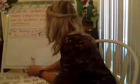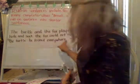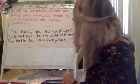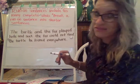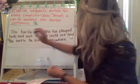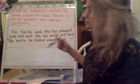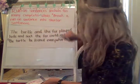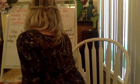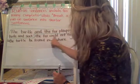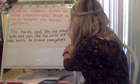Next one. This one has a lot of words and no punctuation. The sentence is: 'The turtle and the fox played hide and seek. The fox could not find the turtle. He looked everywhere.' That's a lot of information. Let's figure out the complete thoughts. 'The turtle and the fox played hide and seek' — that's a complete thought. The naming parts are the turtle and fox, and the action is that they played hide and seek. 'The fox could not find the turtle. He looked everywhere.' That's actually two more complete thoughts, so this one has three complete thoughts in total.